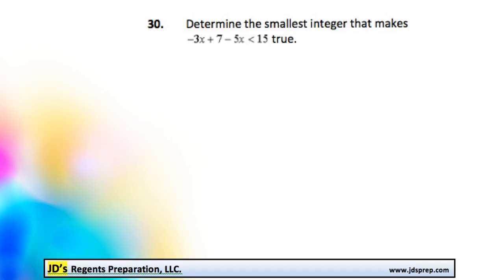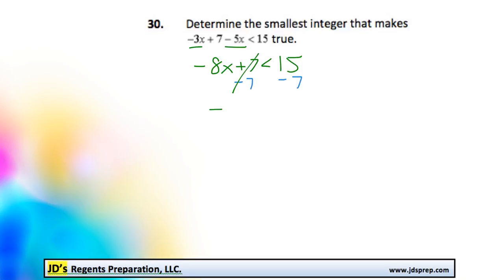I notice right away that we've got two like terms here that we can combine. Negative 3x minus 5x would become negative 8x. At this point we can move the 7 over by subtracting 7, and we get negative 8x is less than 15 minus 7, which gets us 8.